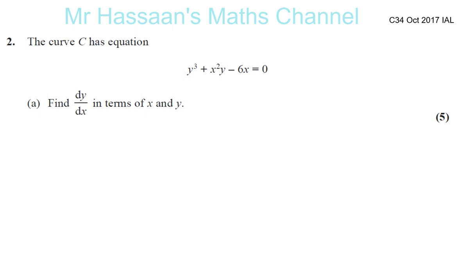We're going to be doing October 2017 C34 IAL, this is Edexcel Pearson, and we're going to do question 2, which is about implicit differentiation. In this question, a curve C has equation y cubed plus x squared times y minus 6x equals 0, and the first part tells us to find dy/dx in terms of x and y.